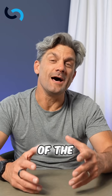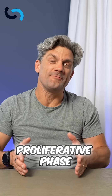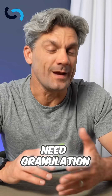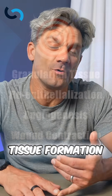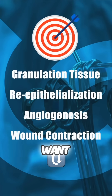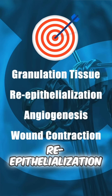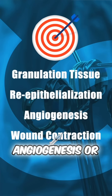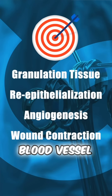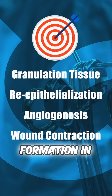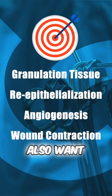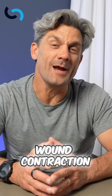What are the goals of the proliferative phase? The goals are granulation tissue formation, re-epithelialization, angiogenesis or blood vessel formation in the wound, and wound contraction.